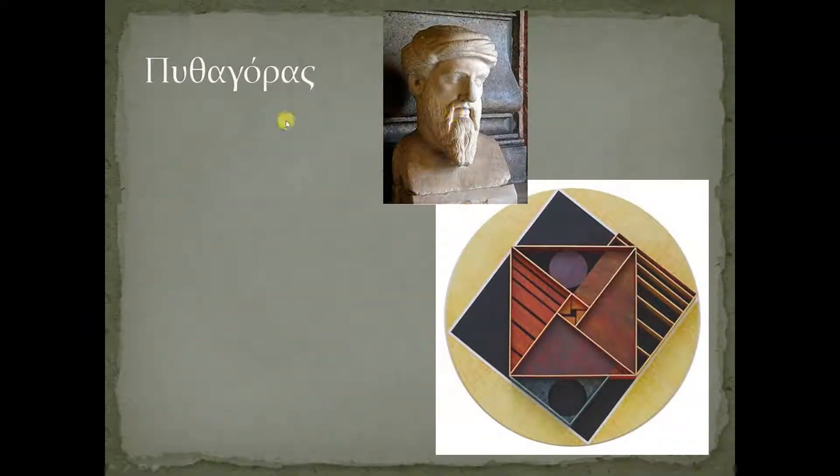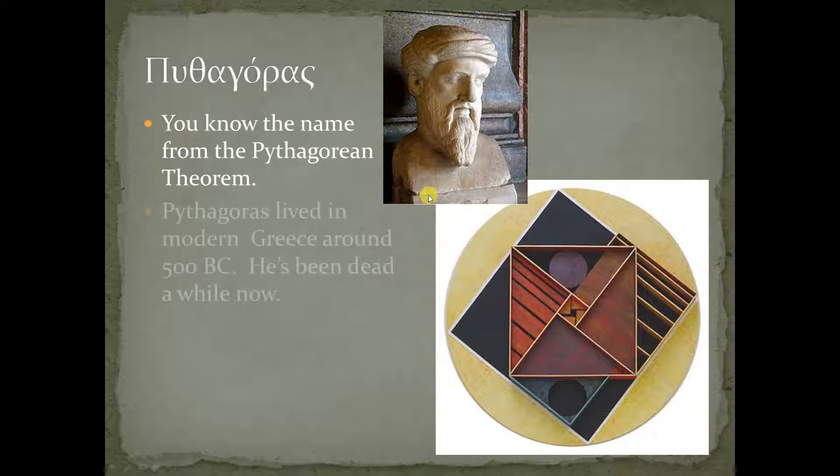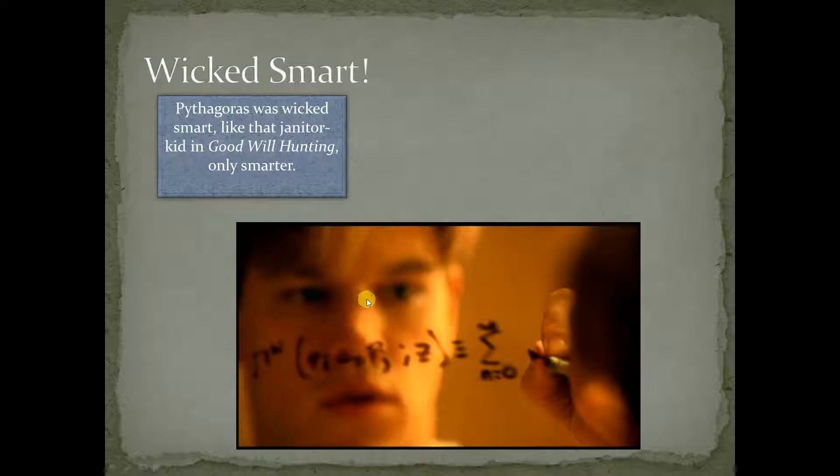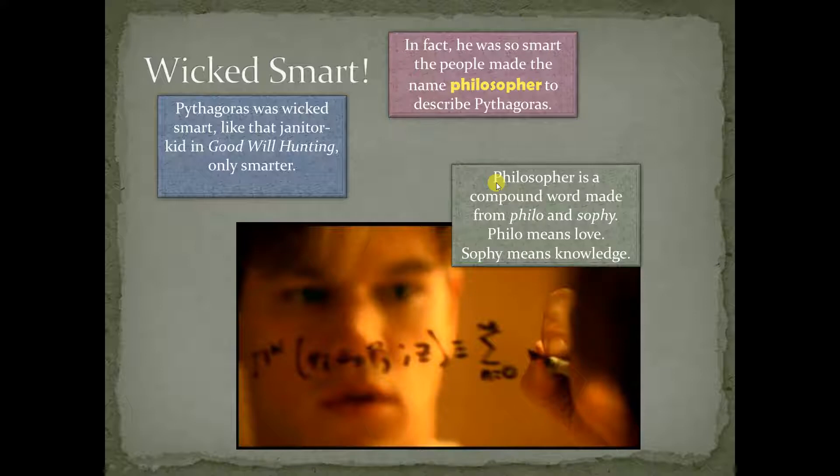This dude right here, this is Pythagoras. He's known for the Pythagorean Theorem. He's been dead a really long time. Even his dust has died. Pythagoras was wicked smart. I mean, smarter than that dude in Good Will Hunting. He was so smart, they made up a new word to describe how smart he was: Philosopher.